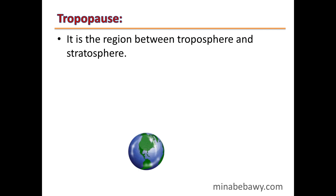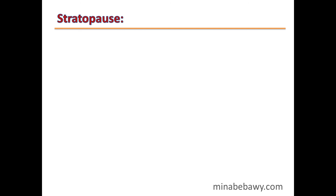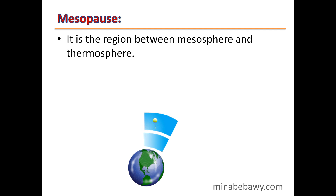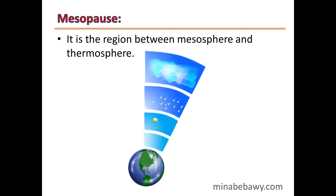The boundary regions between layers are: the Tropopause, between the Troposphere and Stratosphere; the Stratopause, between the Stratosphere and Mesosphere; and the Mesopause, between the Mesosphere and Thermosphere. This is the end of Lesson One — thanks for watching.